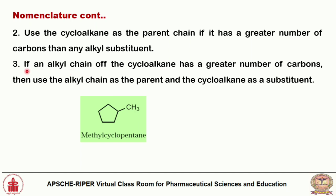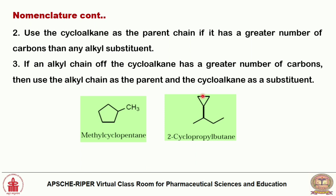The third rule: if an alkyl chain attached to the cycloalkane has a greater number of carbons than the ring, use the alkyl chain as the parent and the cycloalkane as a substituent. For example, cyclopropane with a butane chain — butane has four carbons versus three in the ring, so butane is the parent. The cyclopropane is attached at the second position, giving 2-cyclopropylbutane.